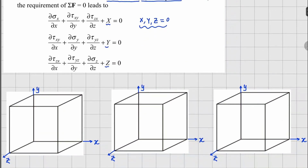To consider a general state of stress, for clarity I have drawn three cubes. On the first cube I will look at stresses on the x-face, on the second on the y-face, and on the third on the z-face — but in reality all three overlap. Looking at the x-face, this is your positive x-face and this one is your negative x-face.